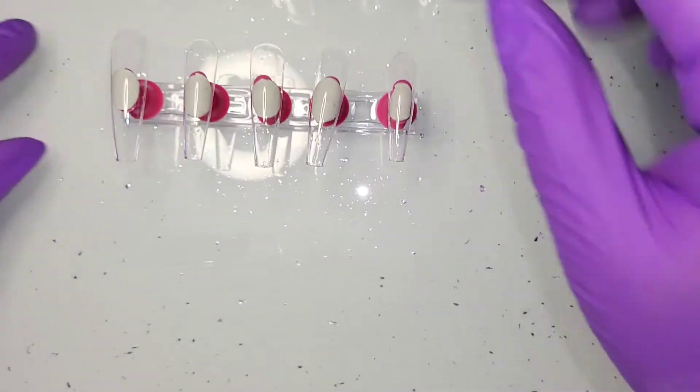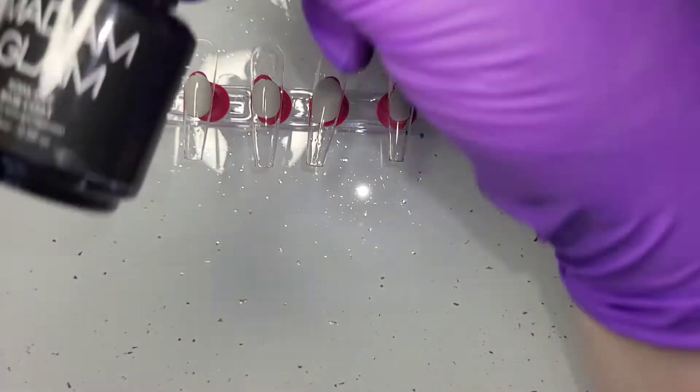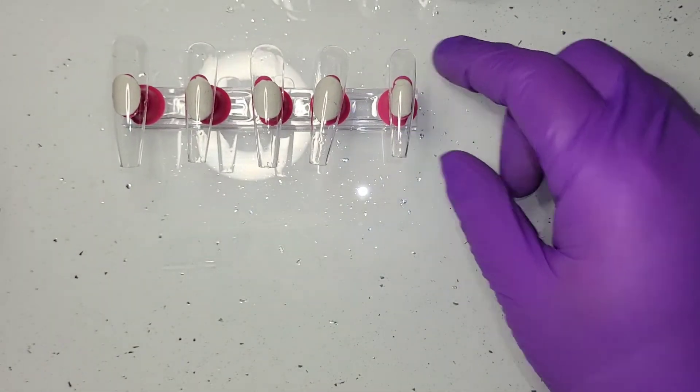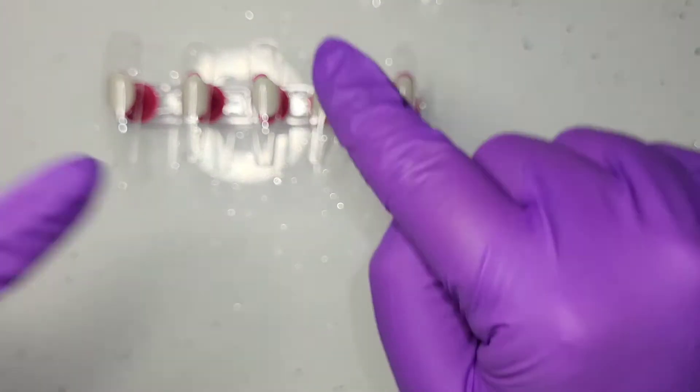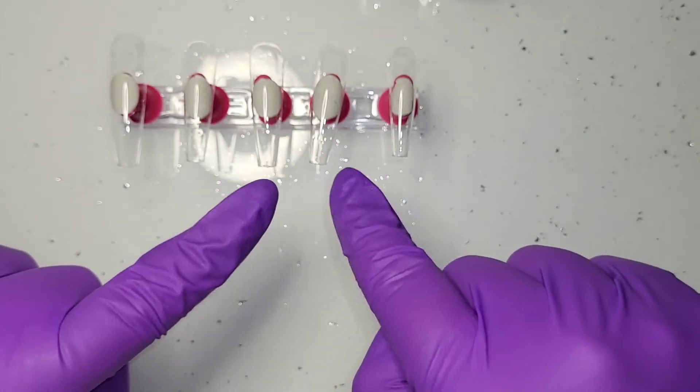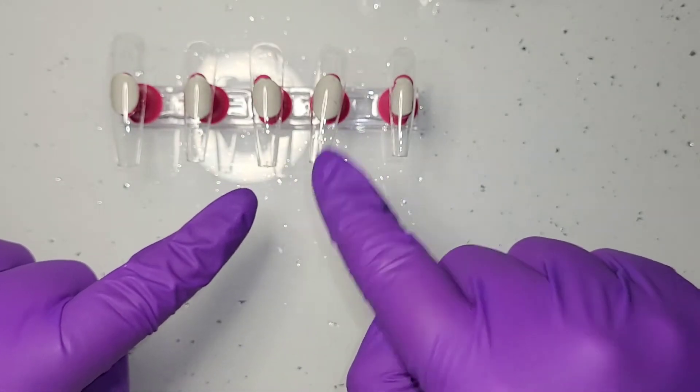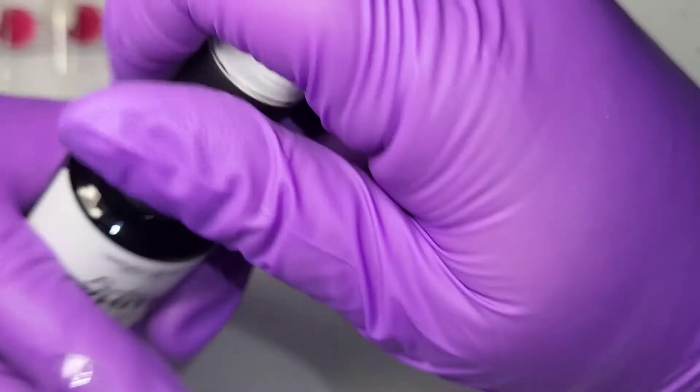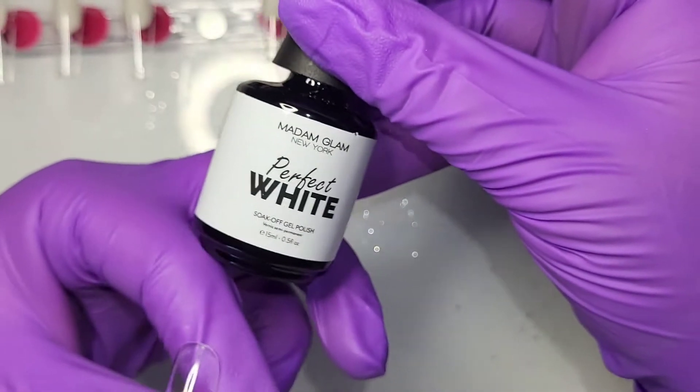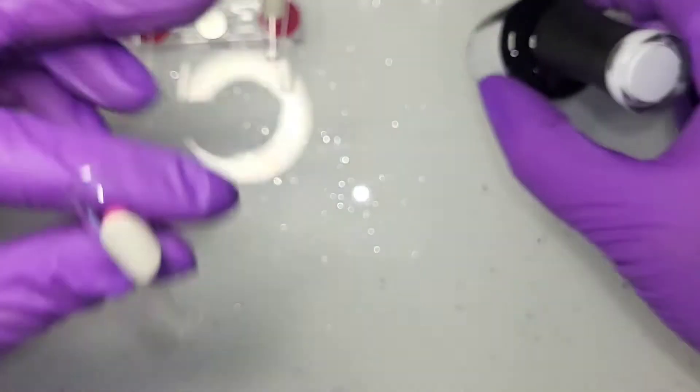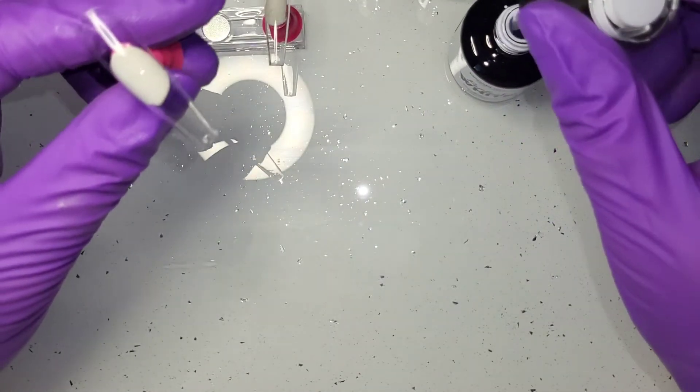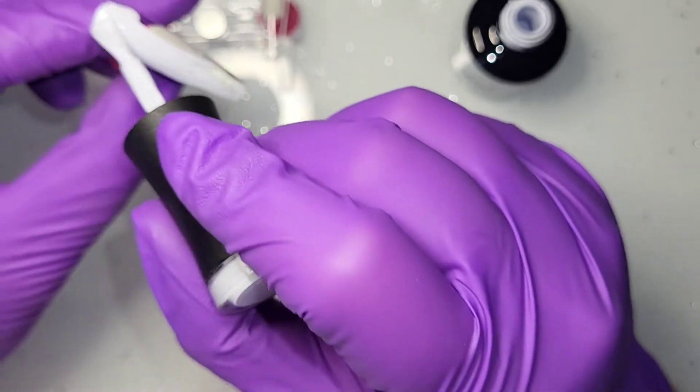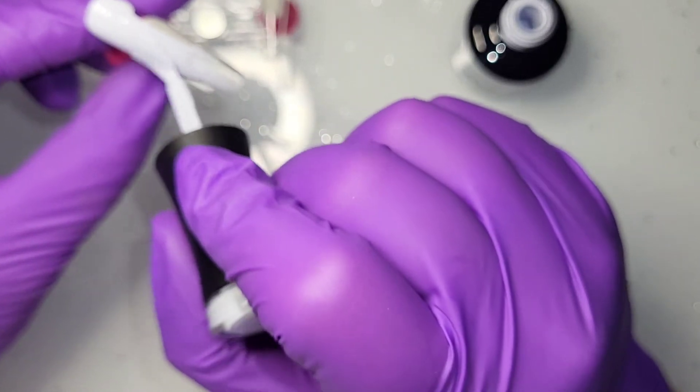They've had a Madam Glam soak-off base coat, cured for 30 seconds. I'm going to have white on this one. I'm using the Perfect White from Madam Glam, using a mixture between Madam Glam and Beetles for the gel colors.